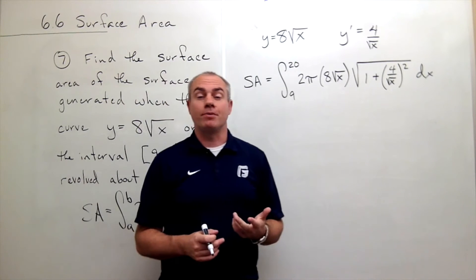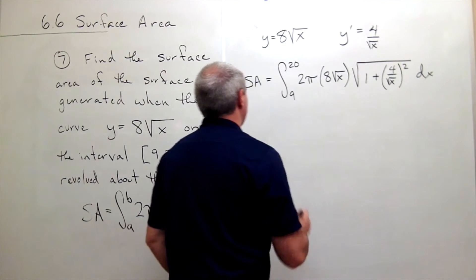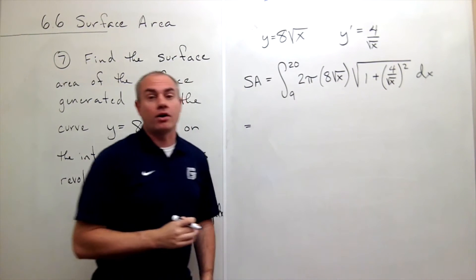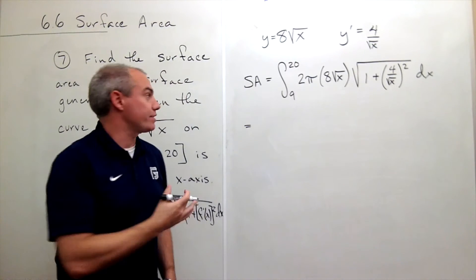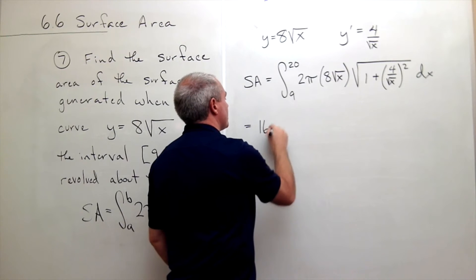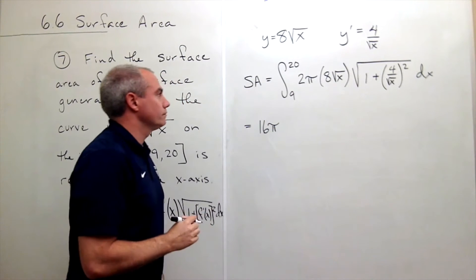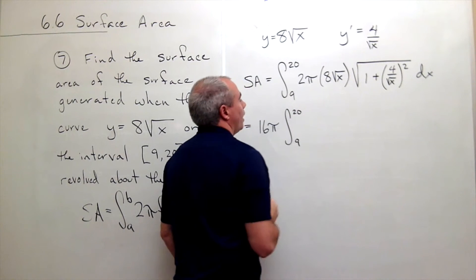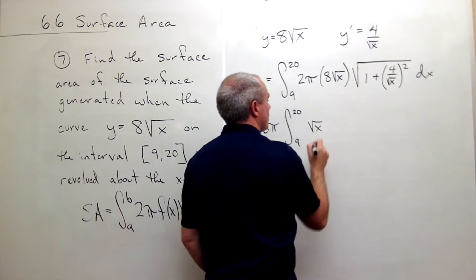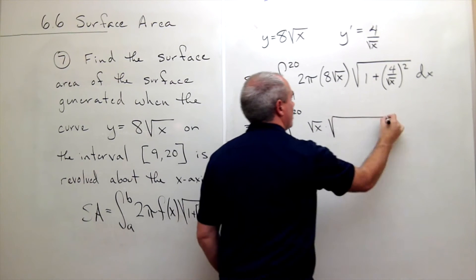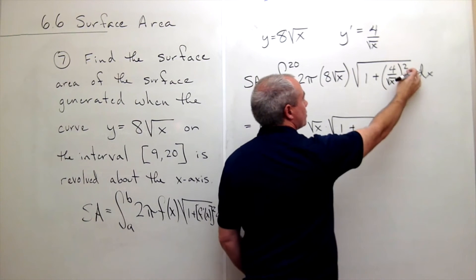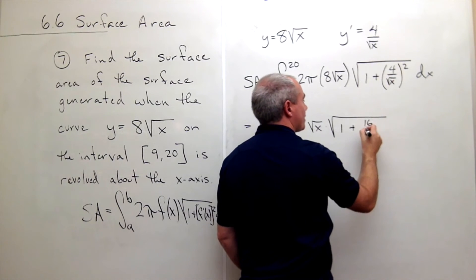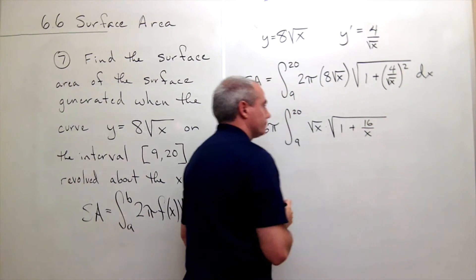The first thing I'll do is simplify a little bit. See if I can make this look a little better. First of all I see 2π and 8 are all constants, so we can pull that constant outside of the integral and write this as 16π. And on the inside we get the integral from 9 to 20 of the square root of x times the square root of 1 plus, and now let's square this guy: 4 squared is 16, square root of x squared is x dx.